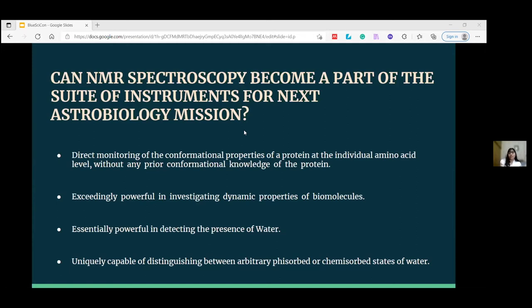That means we do not have the knowledge of the structure of the protein, but still we can find the structure or even determine its complexity at amino acid level. Furthermore, NMR spectroscopy is uniquely suited for and has been exceedingly powerful in investigating dynamic properties of biomolecules.